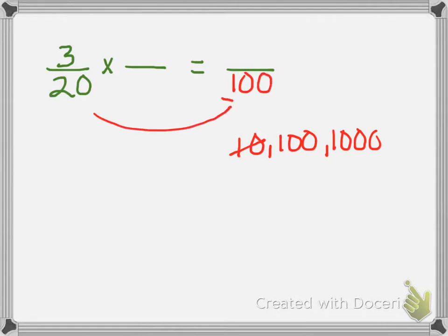Twenty times what gives me one hundred? Twenty times five. Whatever I do to the bottom, I do to the top. What is three times five? Fifteen. I write my answer as fifteen hundredths.